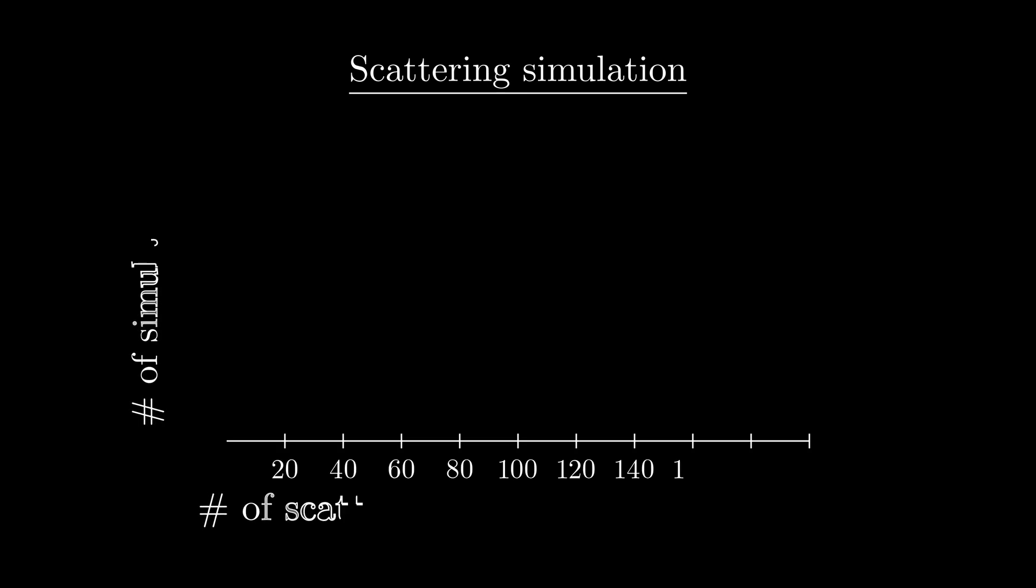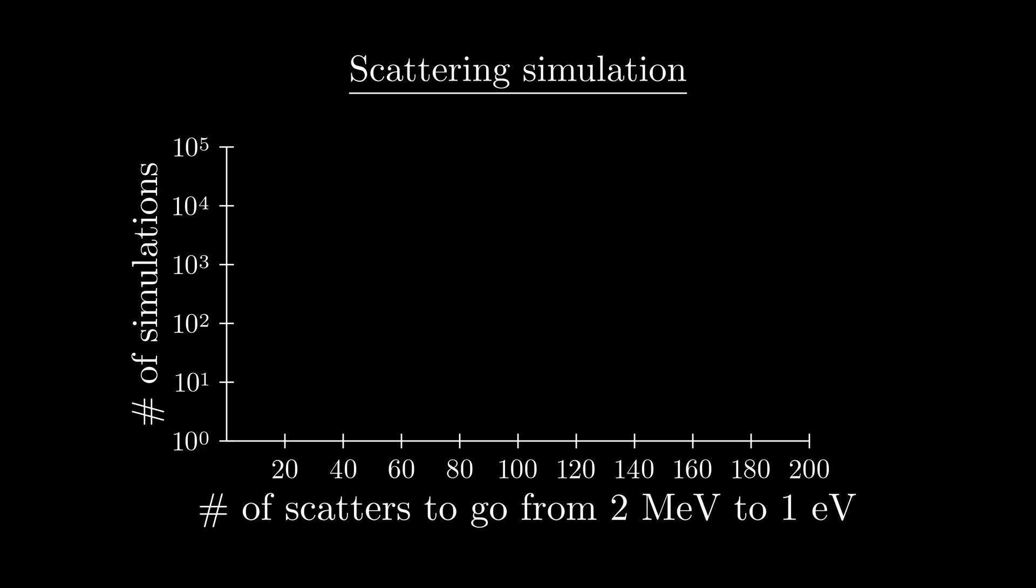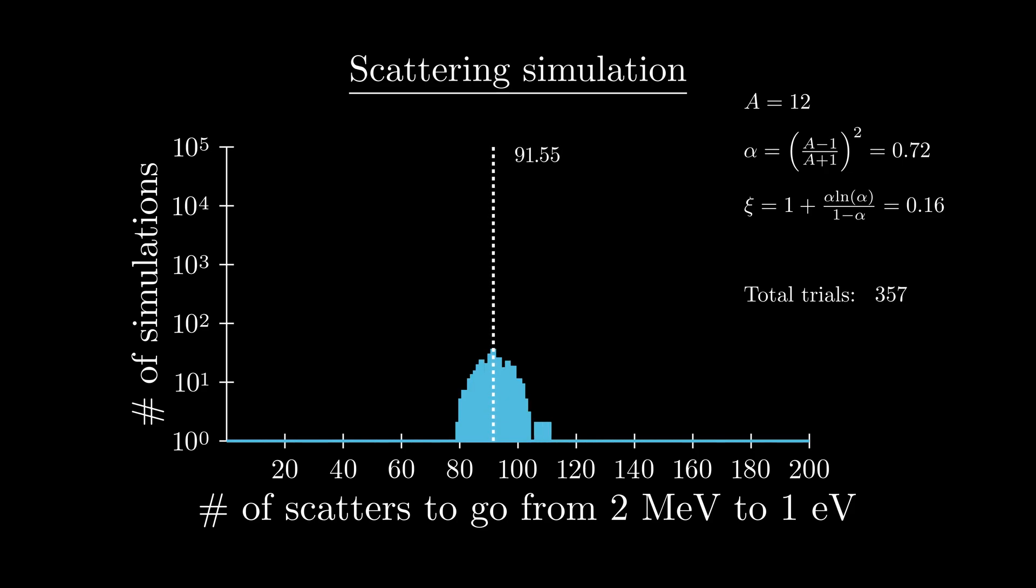Finally, let's up A to 12. This could be something like carbon, which is used to slow down neutrons in most gas-cooled reactors. Here, our alpha value rises to 0.72 and our average change in lethargy per scatter drops to 0.16. Our simulation, after a little bit of time, predicts that it takes around 90 scatters to reach 1 eV. This lines up with our prediction of about 92 analytically.